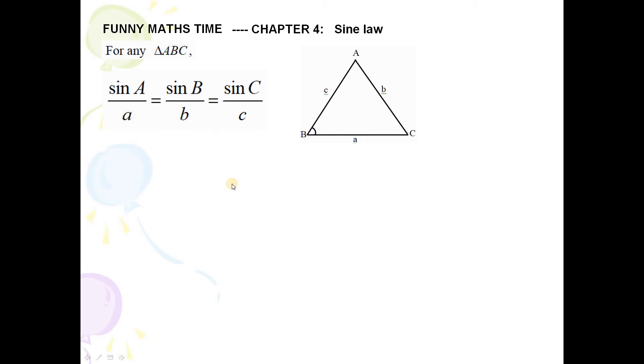Okay, now let me prove the Sine Law. For any triangle ABC, the area is equal to, we have three versions of triangle ABC.